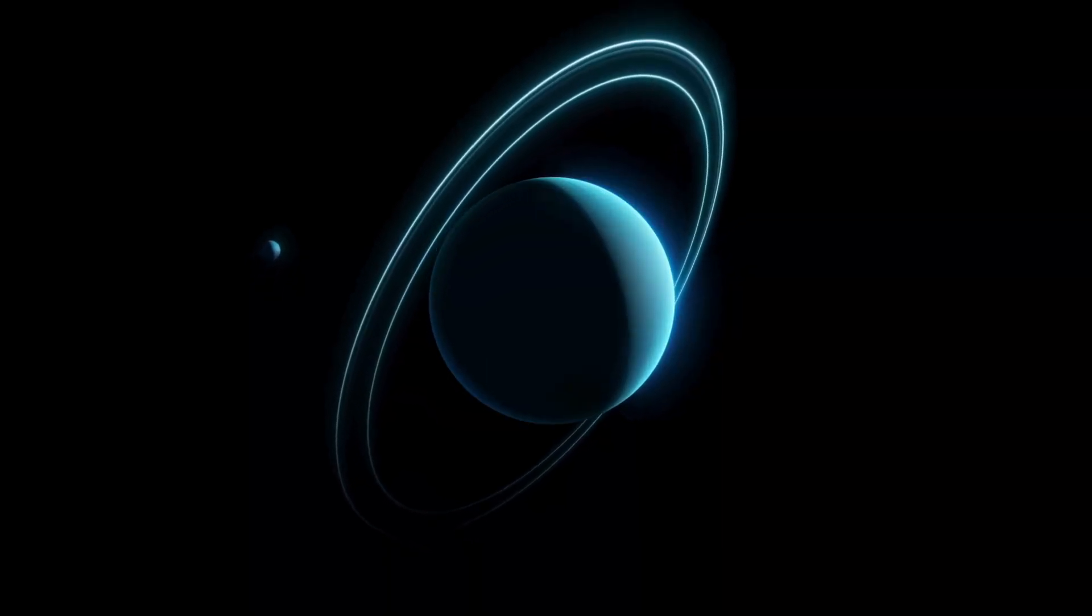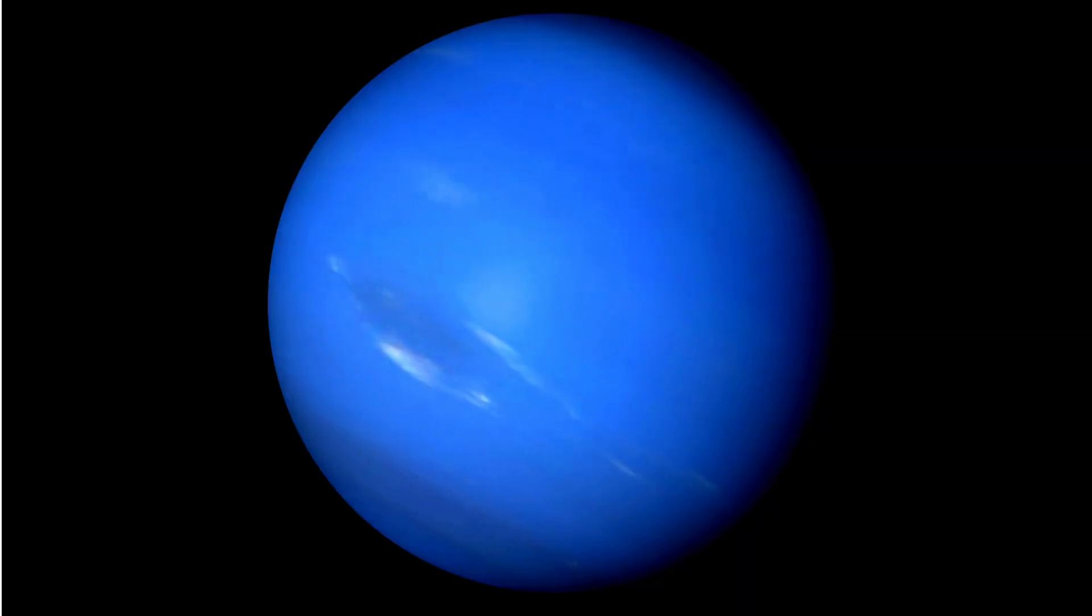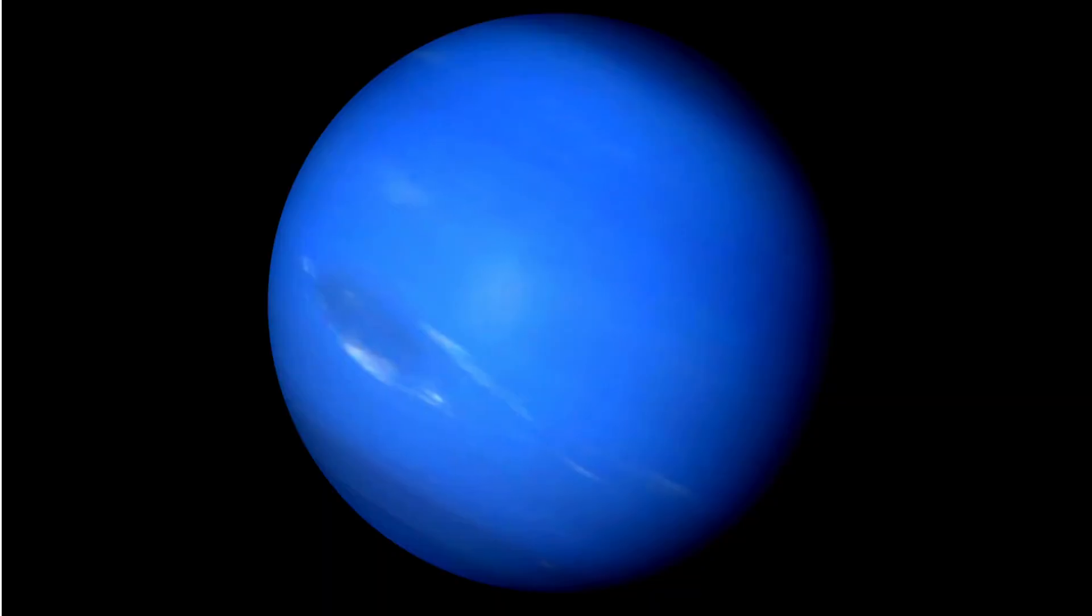Last but not least, we have Neptune. Can you say Neptune? Fantastic! Here are three facts about Neptune. Neptune is known for its deep blue color. It has strong winds and storms. Neptune has 14 known moons.